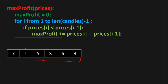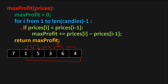With values 1 and 7, the if condition is false. Then with 5, we have a profit of 5 minus 1 equals 4. With 3 and 5, the condition is false. With 3 and 6, we get a profit of 3. With 6 and 4, the condition is false. So we are done with the for loop. At the end we return max profit, which is 4 plus 3 equals 7.